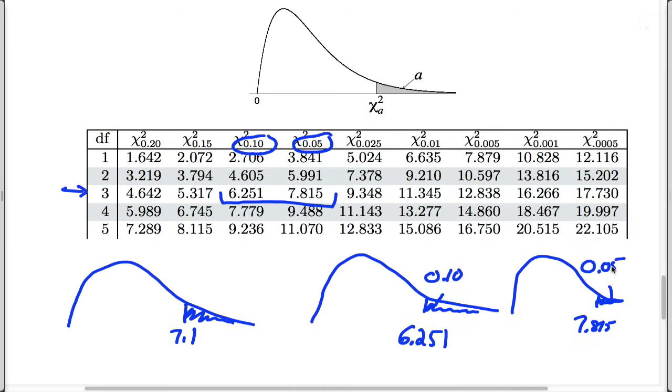Now that's important for us because 7.1 falls in between these two values, which implies that the area that we need falls in between these two values. So this area must be less than 0.10 but greater than 0.05.